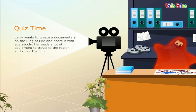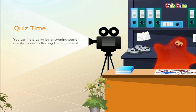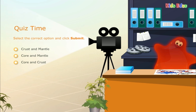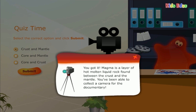Larry wants to create a documentary on the Ring of Fire. He needs equipment to travel to the region and shoot the film — you can help by answering questions. Magma is found between two layers of the Earth. Can you identify the two layers? The answer is: crust and mantle. Magma is a layer of hot molten liquid rock found between the crust and the mantle.